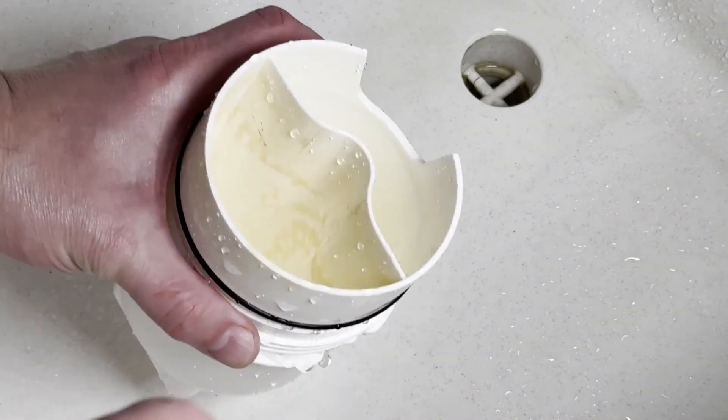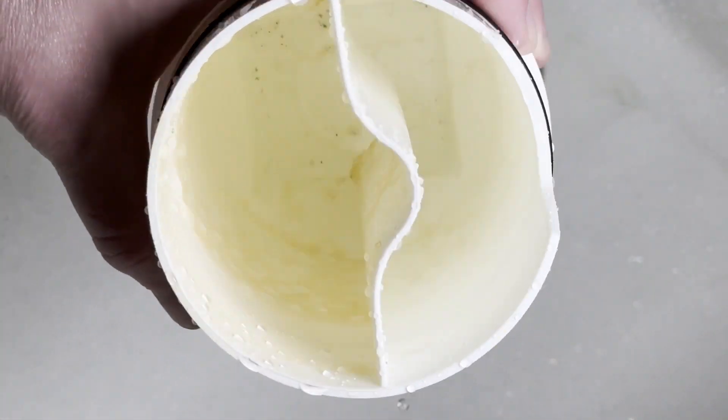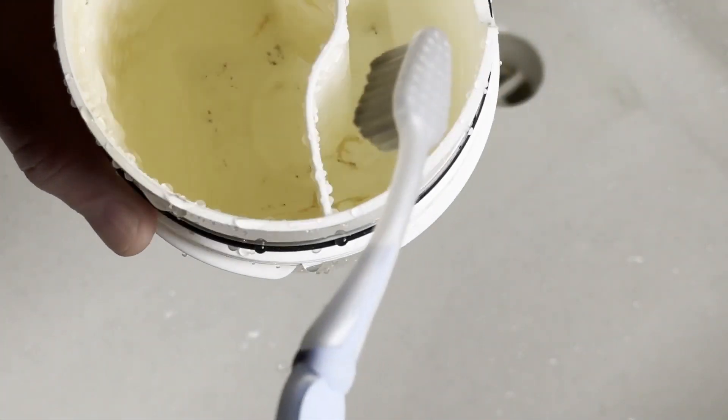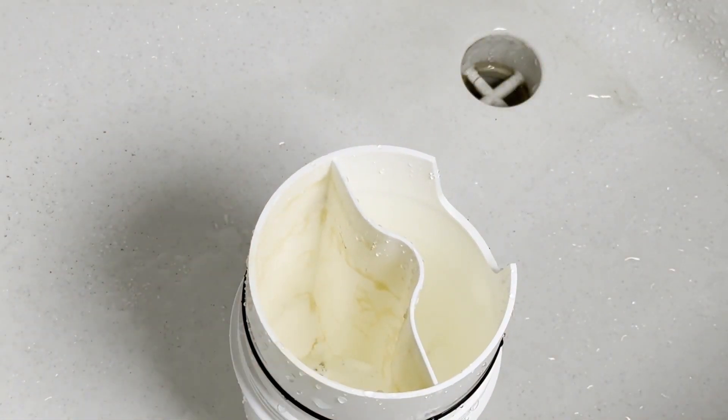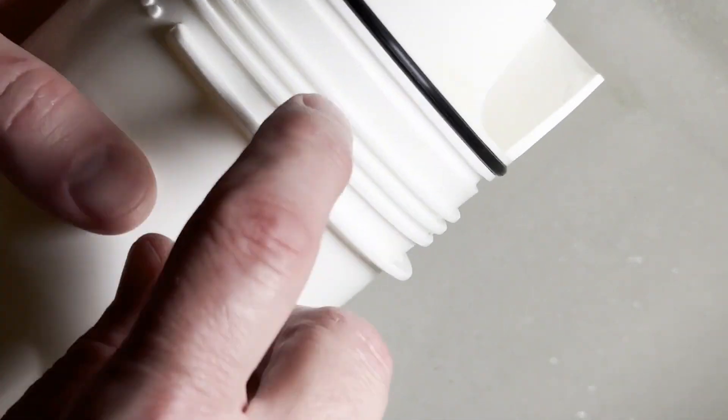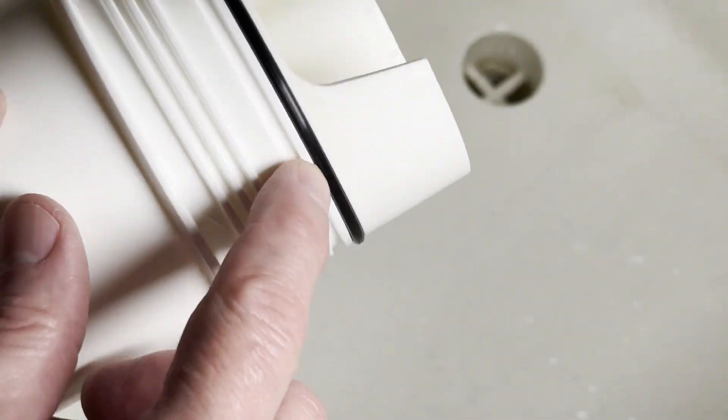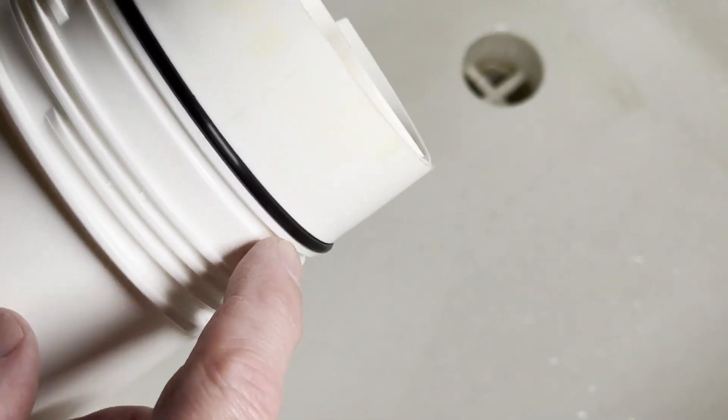They say in the directions to clean this out. I found a toothbrush was about the only thing I could get down in there, and I can't get all this out, so I cleaned it the best that I could. Now would be a good time to inspect this gasket. Maybe use some silicone grease if it's leaking.